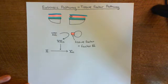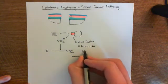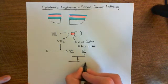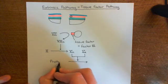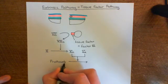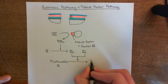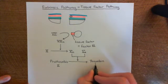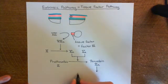After this, the pathway is exactly the same. So 10a will combine with its cofactor, which is 5a, and the two of them will then activate factor 2, or prothrombin, into thrombin, or factor 2a. Prothrombin, also known as factor 2, will be activated into thrombin. Thrombin then converts fibrinogen, or factor 1, into factor 1a, or fibrin.